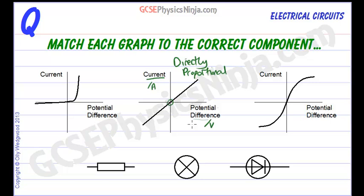It means that if you double one quantity, if you double the voltage, then you'll double the current going through the component. If you triple the potential difference voltage, you'll triple the current.